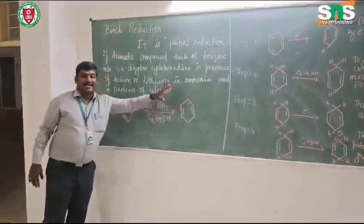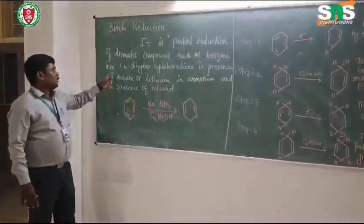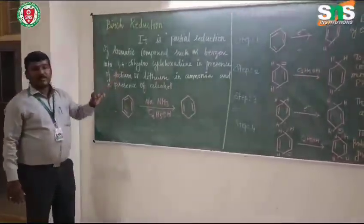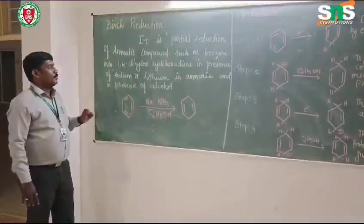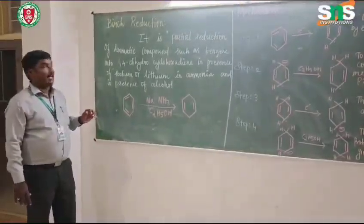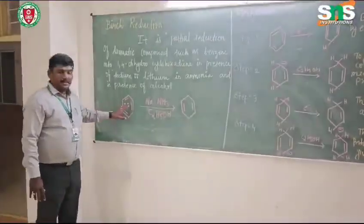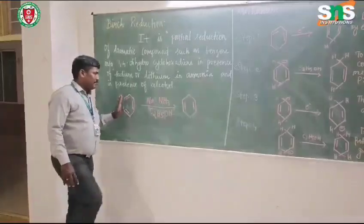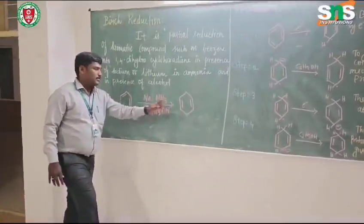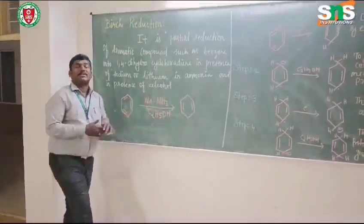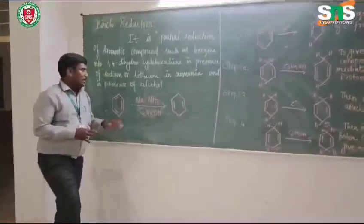Hydrogen will be added at the first and fourth positions. So, benzene will be converted into 1,4-dihydrocyclohexadiene. This is the Birch reduction of benzene.